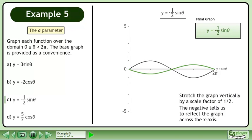The negative tells us to reflect the graph across the x-axis. This is the final graph, y equals negative one-half sine θ.